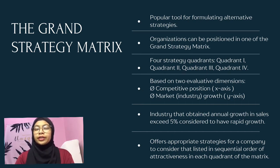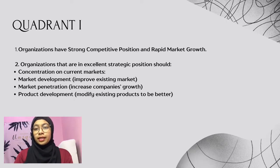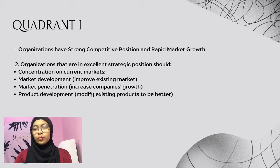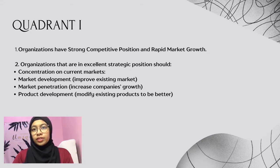There are four quadrants that will be discussed. In quadrant one, organizations are in an excellent strategic position. The first quadrant refers to firms or divisions with a strong competitive position operating in rapid market growth. Such firms are better to adopt strategies such as market development, market penetration, and product development.